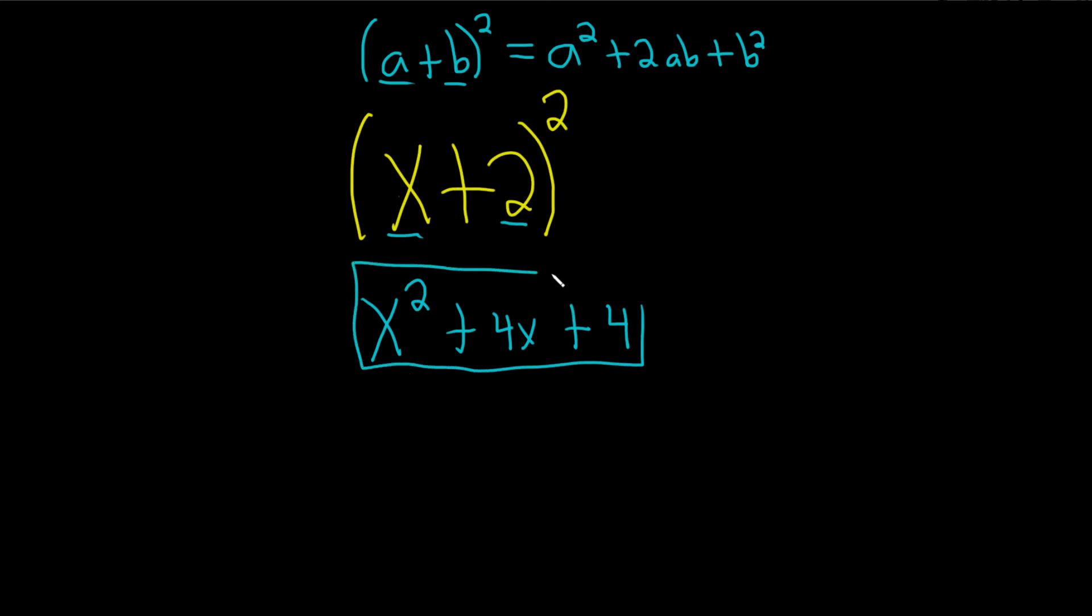So it makes it easier than actually having to follow the formula. If you just follow the formula strictly, it would look like this. It would look like X squared plus, and then AB, so 2X2, nobody does that, plus 2 squared. That's confusing.